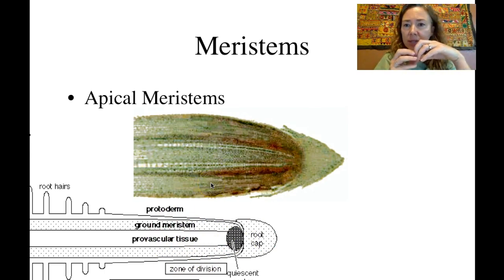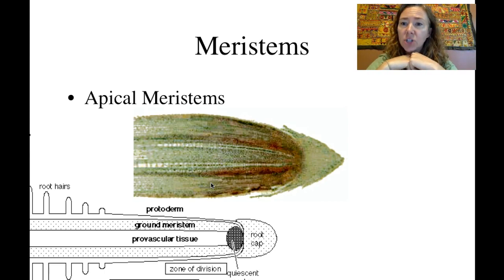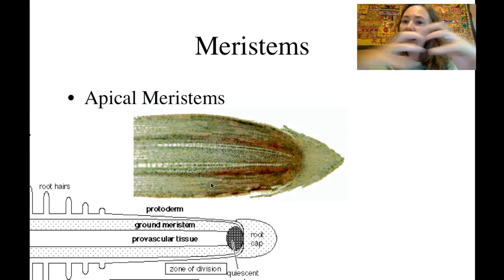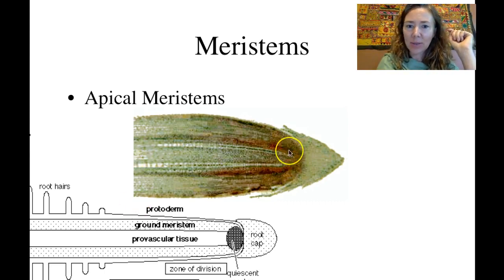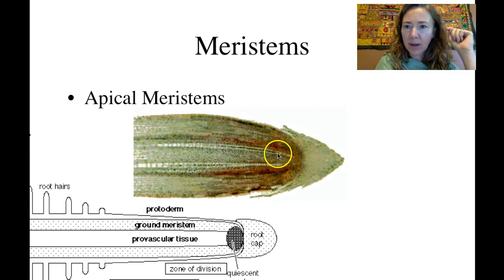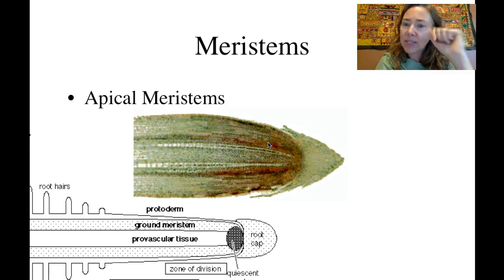When cells divide, there are a couple of different types of cell division. There's cell division that happens because of the need to create gametes or sexual cells — like sperm, pollen, or eggs — and that kind of cell division happens through meiosis. Mitosis is cell division where you're basically creating an exact replica of an existing cell, and this is used to create new cells in a region of growth like our meristem. We'd be able to see that cell division happening at the very tip of these roots, and we also see it at the very tip of the shoots.